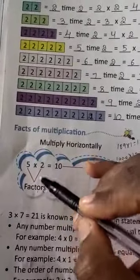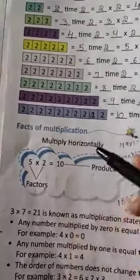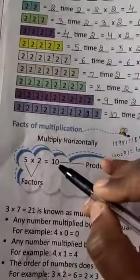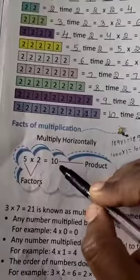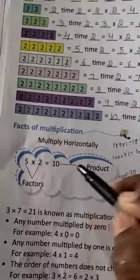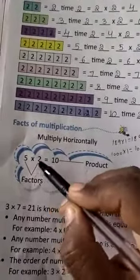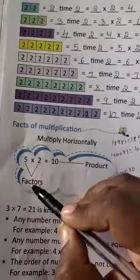5 and 2 are called factors, and the answer is called the product.